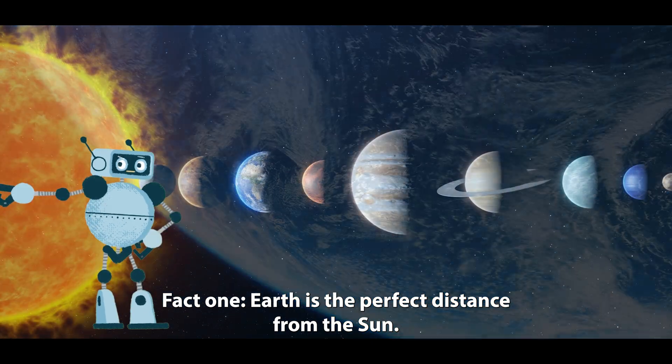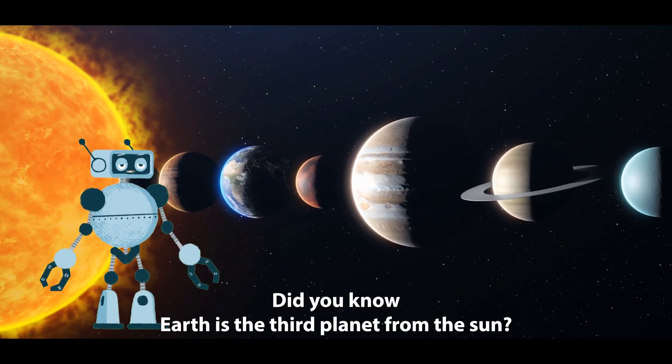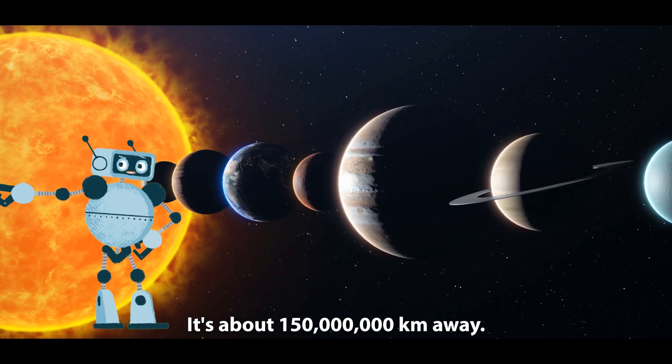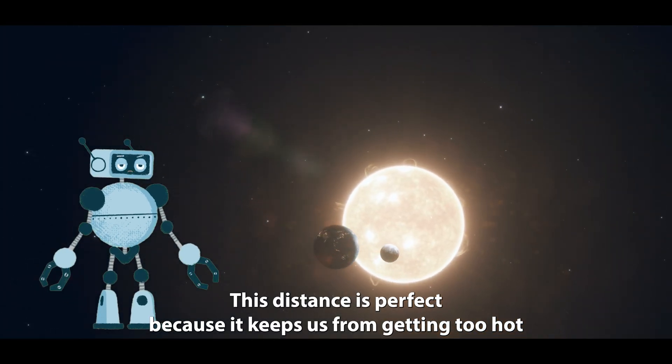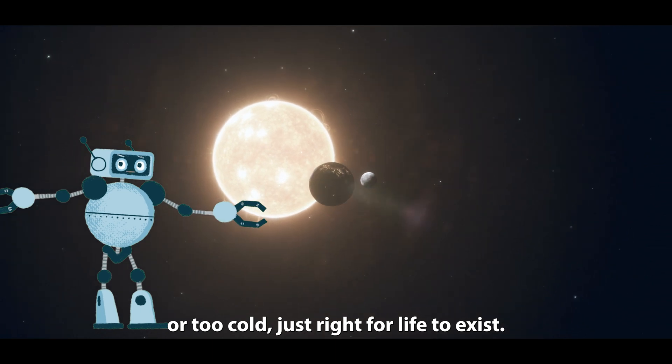Fact one: Earth is the perfect distance from the sun. Did you know Earth is the third planet from the sun? It's about 150 million kilometers away. This distance is perfect because it keeps us from getting too hot or too cold, just right for life to exist.